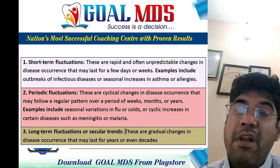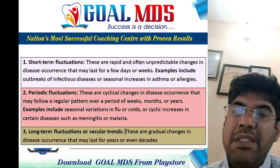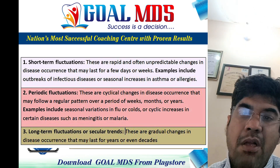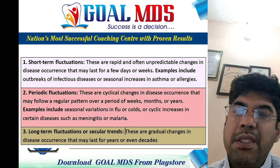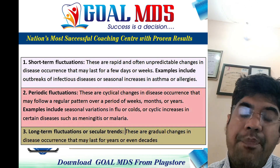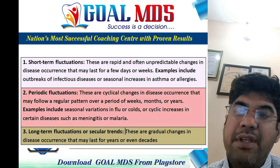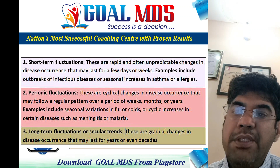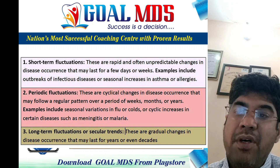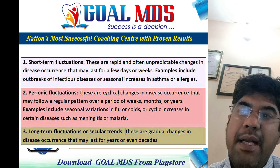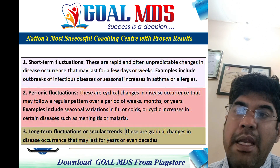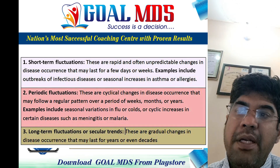There are three types of time fluctuation. First, short-term fluctuation — rapid and unpredictable changes in disease that may last for a few days or weeks. Second, periodic fluctuation — which may follow a regular pattern over a period of weeks, months, or years. Third, long-term fluctuation — which may last for years or even decades. Time is an important characteristic in epidemiology, and understanding the dynamics of disease occurrence over time can help identify patterns and trends.